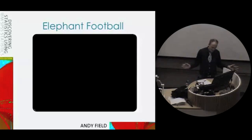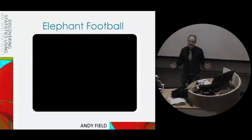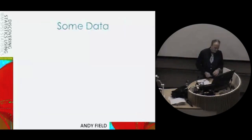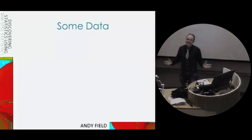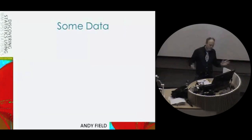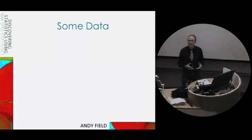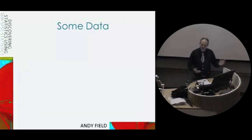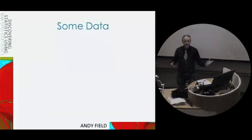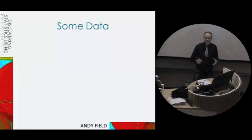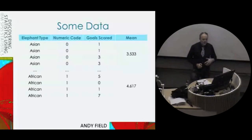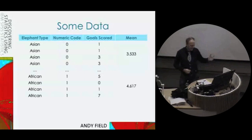This happens a lot — when there are world problems, they phone me, say 'Andy, collect some data, sort it all out.' So that's what I did. Over the course of a season of elephant football, I collected data about how many goals different elephants scored and from which continent they were from. I had 60 Asian elephants and 60 African elephants that I tracked throughout the season.